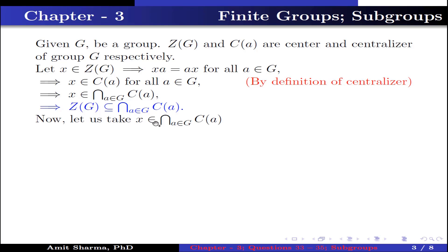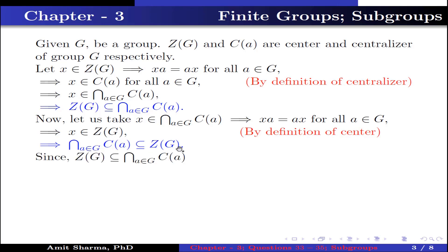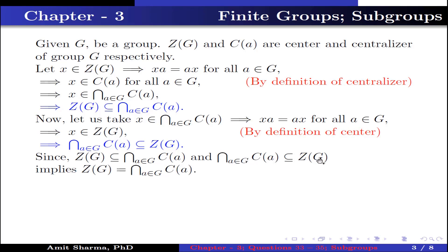Now let x belong to the intersection over A ∈ G of C(A). This implies xA = Ax for all A ∈ G. This implies x ∈ Z(G), by the definition of center. Therefore the intersection over A ∈ G of C(A) is a subset of Z(G).